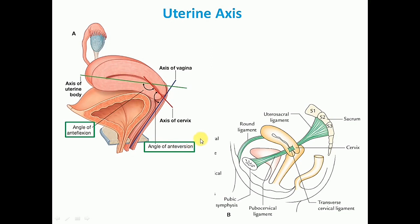Any increase in intra-abdominal pressure tends to push the uterus against the bladder and pubic symphysis, which further increases the angle of anteversion. The angle of anteversion is maintained by two important ligaments: the round ligament of uterus, which pulls the fundus of uterus forward, and the utero-sacral ligament, which keeps the cervix pulled backwards. These two ligaments maintain the angle of anteversion and prevent the uterus from sagging down into the vagina.